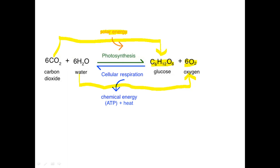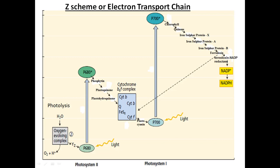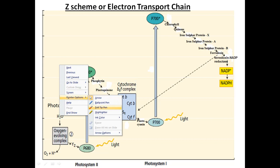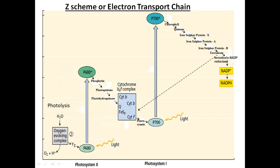Now we will discuss how the photolysis of water occurs — it occurs through the Z scheme. The Z scheme is about the flow of electrons from water to NADP. When electrons are received by NADP, NADP is reduced to NADPH.